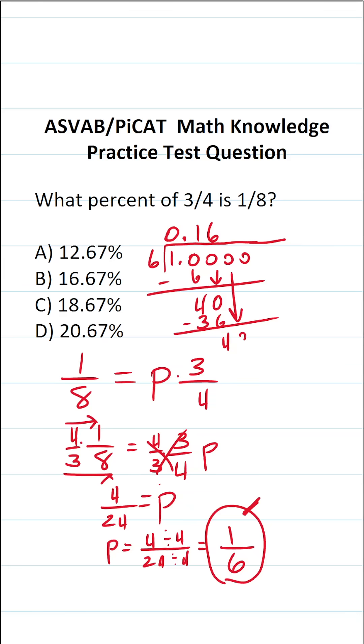How many times does six go into forty without going over? That's going to be six times. Six times six is thirty-six. Forty minus thirty-six is four. Drop down one of these zeros. And you can see that this is going to repeat. This is going to be 0.166666666 and so on and so forth. But as a percent,